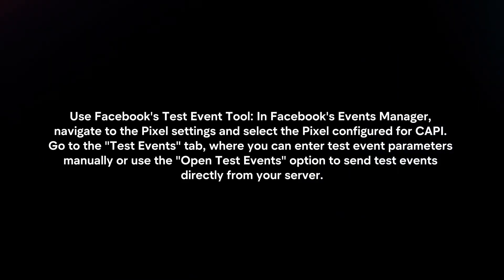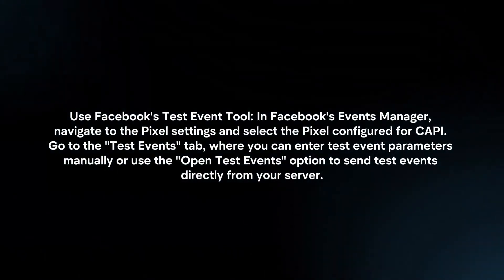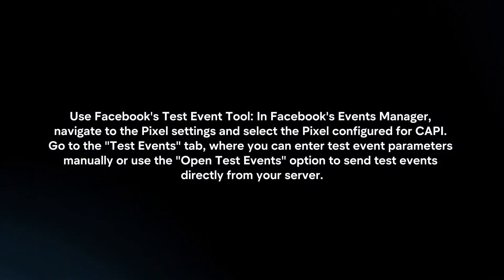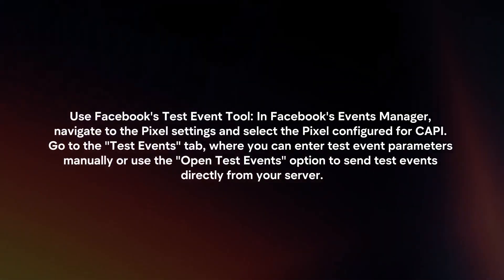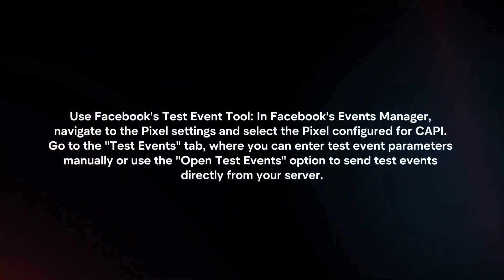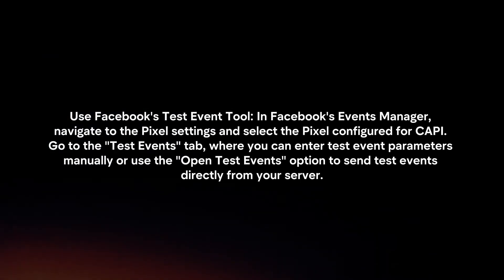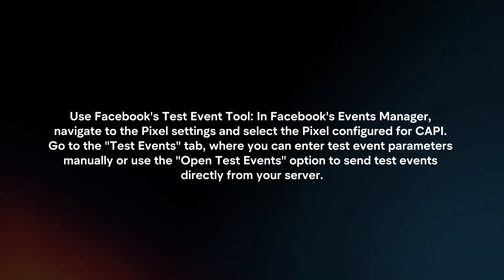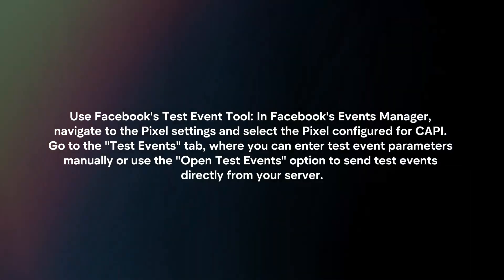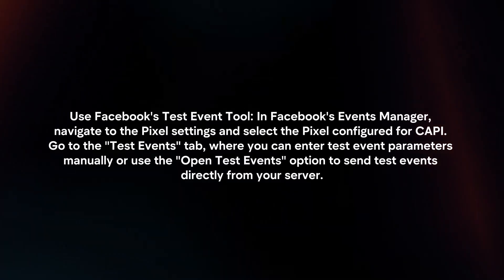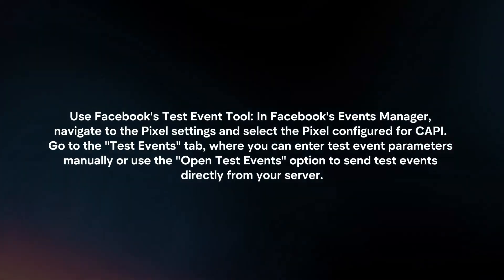Use Facebook's test event tool. In Facebook's Events Manager, navigate to the pixel settings and select the pixel configured for Conversion API. Go to the test events tab, where you can enter test event parameters manually or use the open test events option to send test events directly from your server.